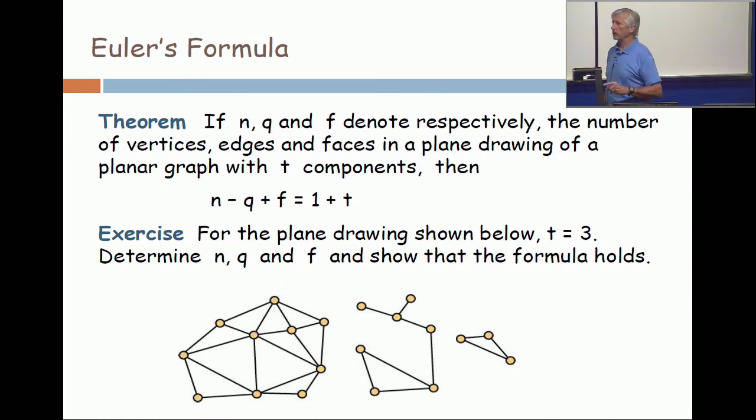When you're counting faces, count one for the exterior face. There's only one exterior face; there can be lots of interior faces. So for this graph with three components, I want you to look at it and tell me how many vertices it has, how many edges it has, and how many faces it has, and verify Euler's formula. I've done the hard part—I've counted the number of components. You count the number of vertices, the number of edges, and the number of faces.